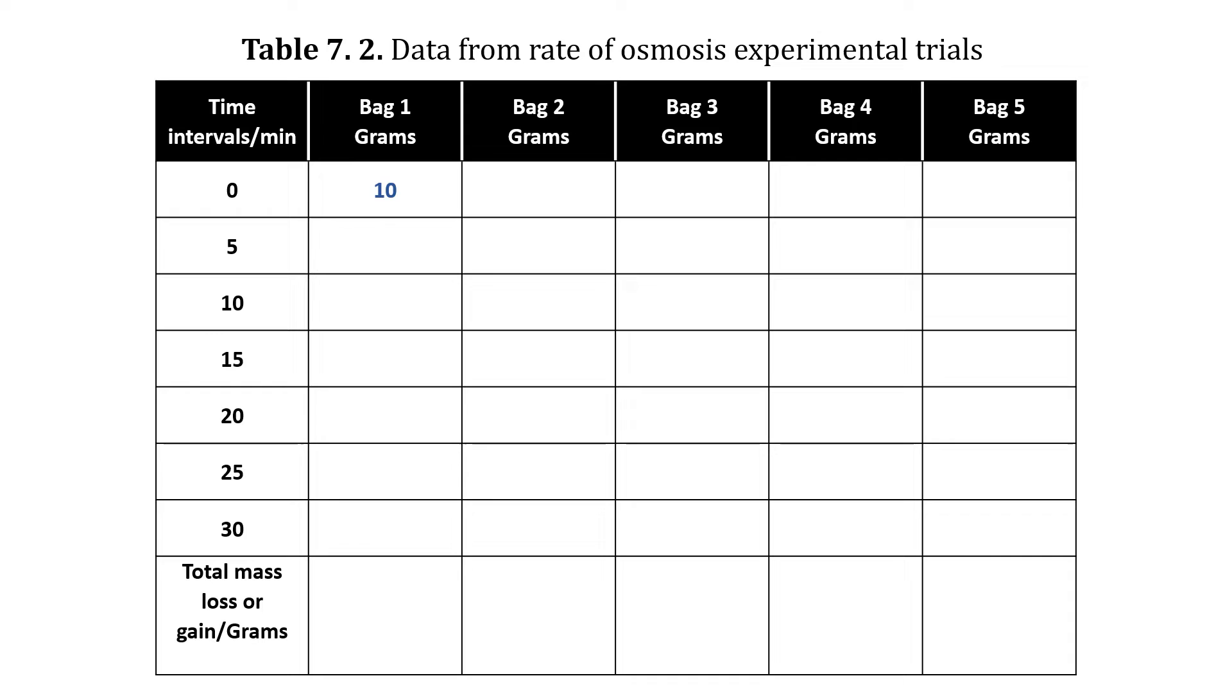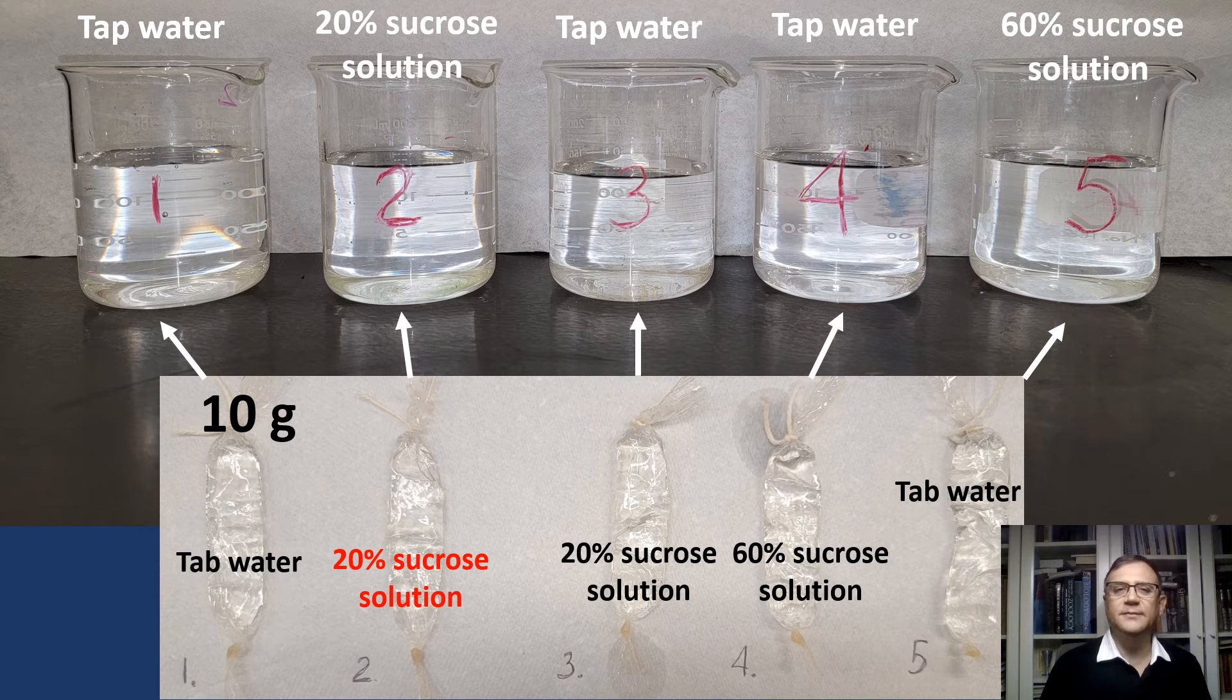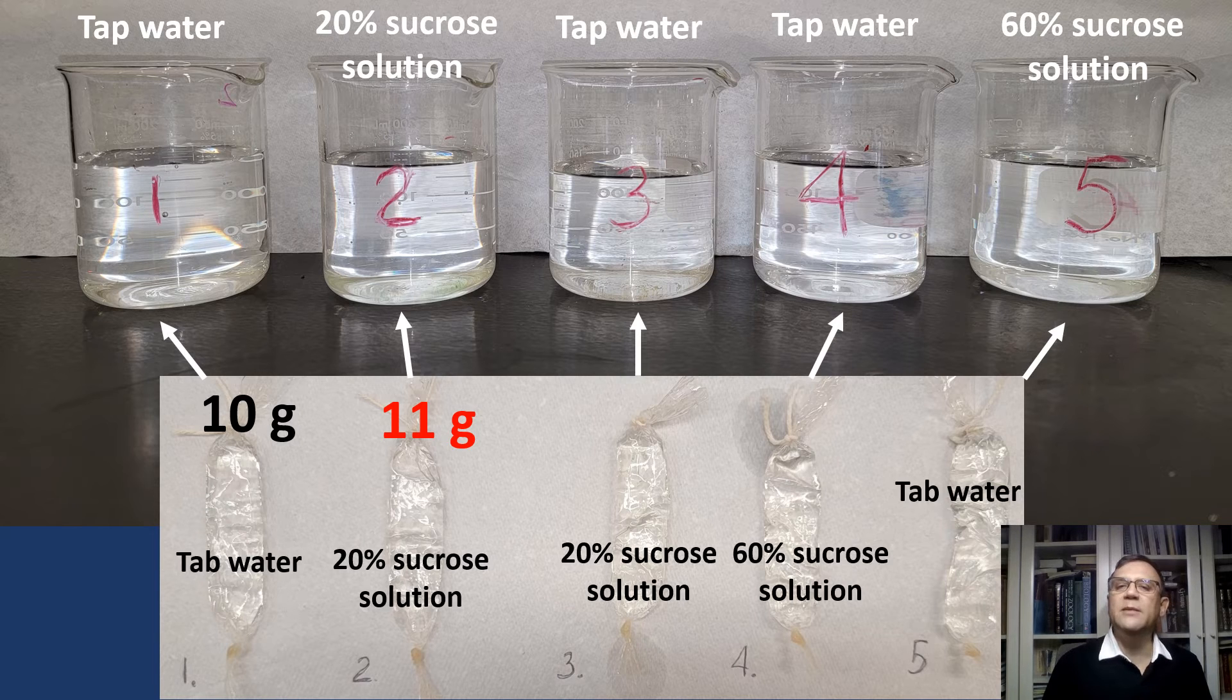If you are conducting this experiment yourself and measure slightly more or less than 10 grams due to pouring more or less of the sample, that's perfectly fine. The exact starting mass is less important. Our main focus is on observing changes in the bag's mass over time. We will track and record these changes every five minutes to examine the differences. Let's measure the mass of bag two. Here it is. Its mass is 11 grams. According to our measurement, 10 milliliters of 20% sucrose solution has a mass of 11 grams. Let's record this in the data table.